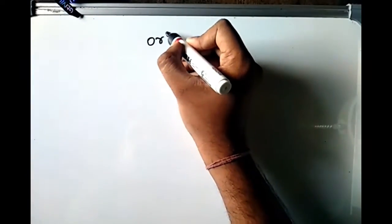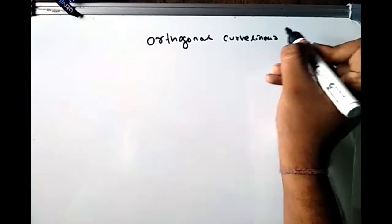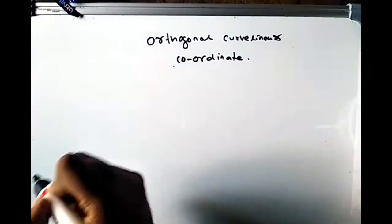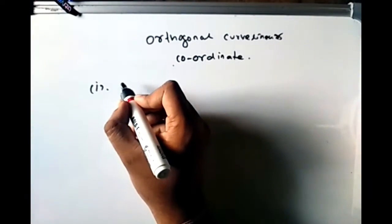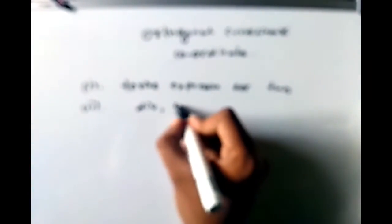In this video we are going to derive the expression for orthogonal curvilinear coordinates. We will also derive gradient, divergence, and curl in orthogonal curvilinear coordinates, and discuss cylindrical polar coordinate as an example.